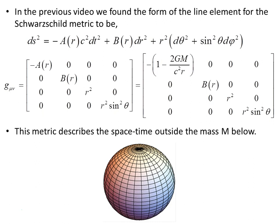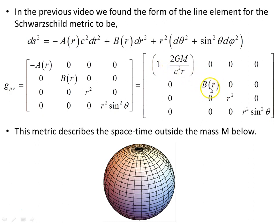In the previous video we found the form of the line element for the Schwarzschild metric. Using symmetry arguments, we produced this diagonal metric. The metric terms are diagonal, and using weak field arguments in general relativity, we found this first component, and we still need to find this second component — the B term. This metric describes the spacetime outside a spherical mass distribution.